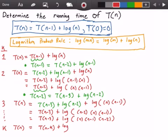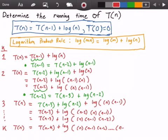Plus the log of: in the first iteration we get log of n, in the second we get log of n minus 1 times n, and in the third we get log of n times n minus 1 times n minus 2. So the pattern gives us n times n minus 1 times n minus 2 times everything in between until we get to n minus k minus 1.